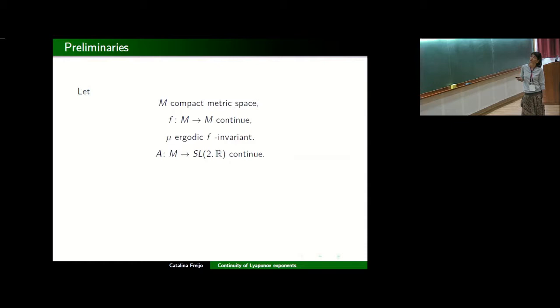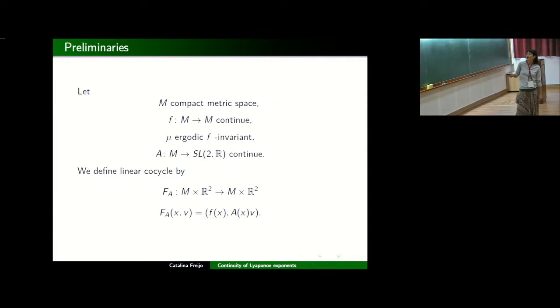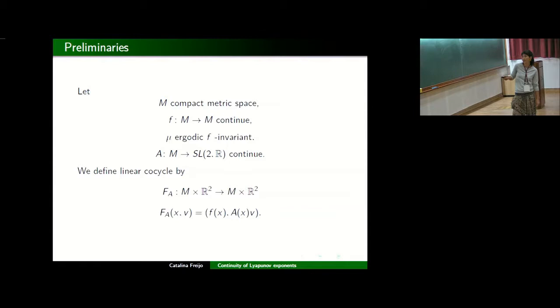A is a continuous mapping into the matrix space. We are going to define a linear cocycle as the map that acts on the product of my compact metric space and R² being in the first coordinate f, and in the second coordinate the A map applied to x in the V vector. This is a concept that we are all a little used to, so there's nothing new under the sun here.